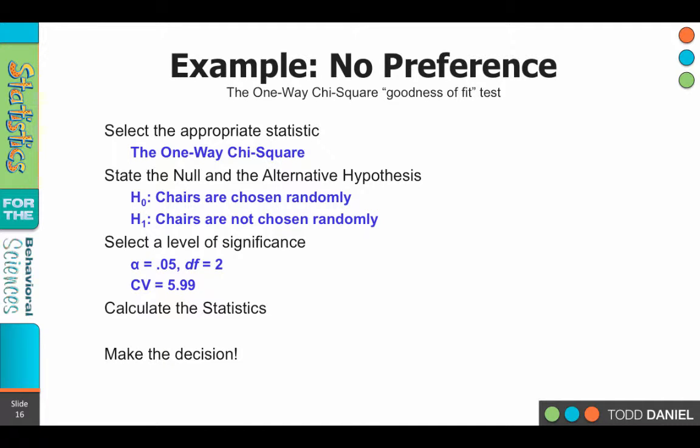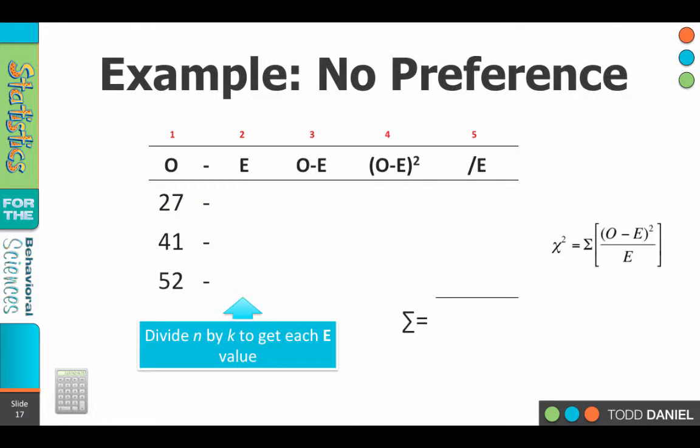Now we're ready to calculate the statistics. The easiest way to do this calculation is just to set up the numbers in a table. So we take each of the values, put them into what I'm going to call the O column, which I've labeled as number one, and now we need to fill in the expected values.